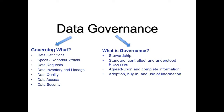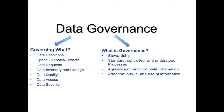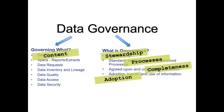Additionally, what's important for governance is to have some sort of agreed-upon and complete information. Of the content you put in there, how do you get agreement and completeness to that detail? And lastly, it's about adoption, buy-in, and use of this information — whether you're capturing data definitions, specs, data request processes, data quality rules, or security policies, how do you get your entire organization to use and adopt them? The way we break those down is to think of five areas of focus around governance: content, stewardship, processes, completeness, and adoption.